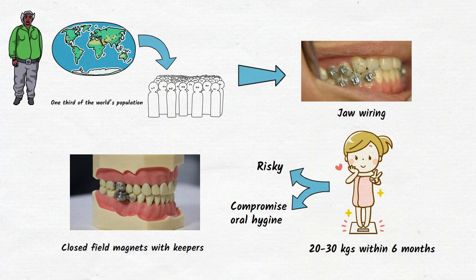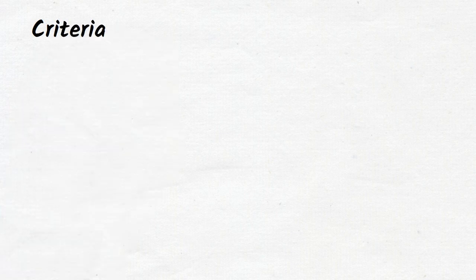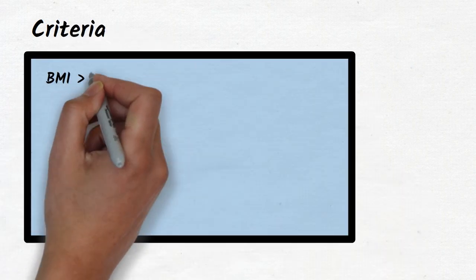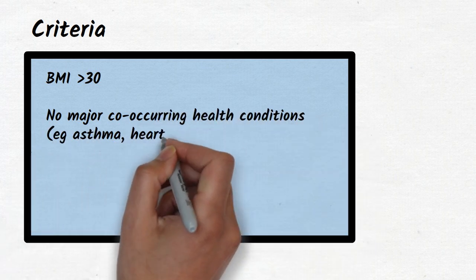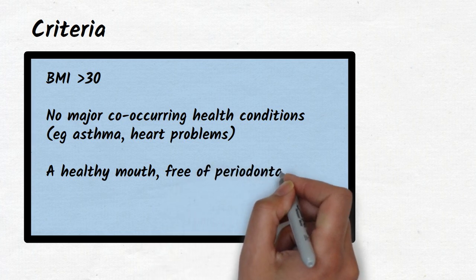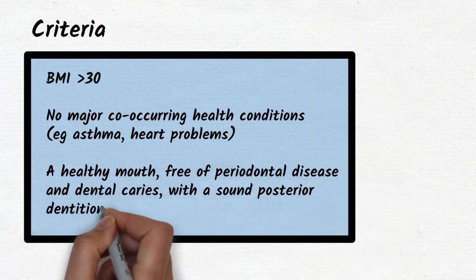So to use this device, one should fulfill some criteria like your BMI should be more than 30. You should not have any major health conditions like asthma or heart problems. You should have healthy mouth free of periodontal diseases and dental caries with sound posterior molars and no missing teeth.